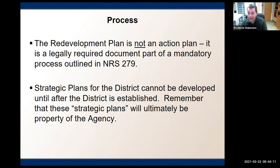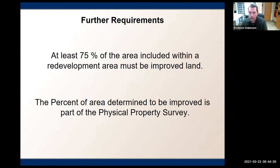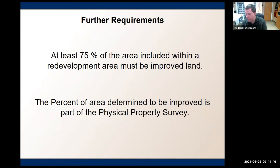At any time a city council or county commission can move to essentially eliminate or restrict its own redevelopment agency despite its semi-autonomous nature, so the redevelopment agency always needs to keep that in the back of their head. There are restrictions on eligibility of certain lands. The general rule of thumb in state law is that at least 75% of the area being considered for inclusion in a redevelopment area must be improved — it can't be just greenfields. That's not redevelopment; that's not revitalization. It has to be truly existing developed land, and you determine that percentage based on the results of the physical property survey.